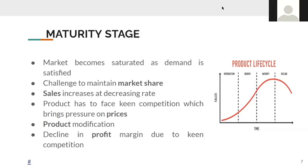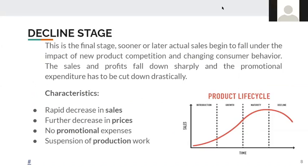The company moves toward product modification — looking for innovative ways to make their product more appealing in order to maintain or even increase their market share. There is a decline in profit margin due to keen competition, and overall the company tries to maintain market share during this stage.